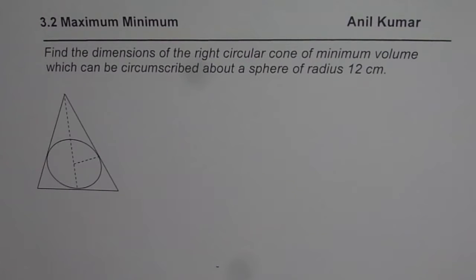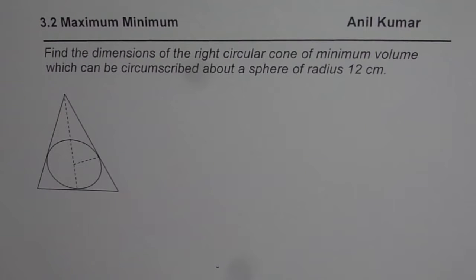I'm Anil Kumar and here is an excellent question on maximum and minimum volume. Find the dimensions of the right circular cone of minimum volume which can be circumscribed about a sphere of radius 12 cm.